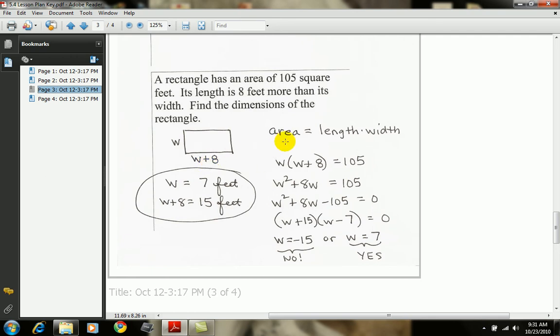Remember how to find area of a rectangle. Area is length times width. So w times w plus 8 equals 105. When I distribute, I get w squared plus 8w equals 105.